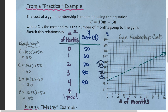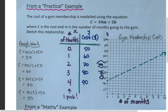I'll do my rough work on the side to keep the table clean. When the number of months equals zero, C equals 10 times 0 plus 50, which is 50 — that's our initial value, so zero months costs $50. When m equals one, 10 times 1 plus 50 gives 60, so one month costs $60. Two months: 10 times 2 plus 50 is 70, so $70. Three months: 10 times 3 plus 50 equals 80, so $80. You can see the pattern — we're increasing by 10 each time, which connects back to our rate of change.